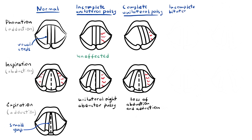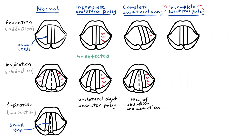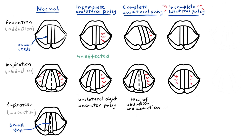Incomplete bilateral palsy means damage to abductor fibers bilaterally. Here the adductors — the closing fibers — draw the cords towards each other. During inspiration, abduction does not occur and the vocal cords do not open. When you cannot open your vocal cords during inspiration, this results in severe respiratory distress. During phonation, the vocal cords stay closed.